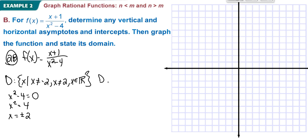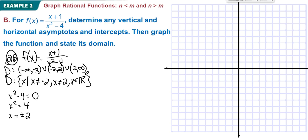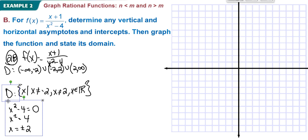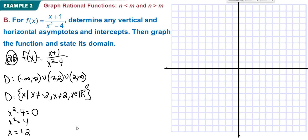In interval notation, the domain goes from negative infinity to negative 2, union with negative 2 to positive 2, union with 2 to infinity. Now for vertical asymptotes: if I factor the denominator, x squared minus 4 equals (x plus 2)(x minus 2), and the numerator is x plus 1. Nothing cancels, so our vertical asymptotes are at x equals negative 2 and x equals positive 2.